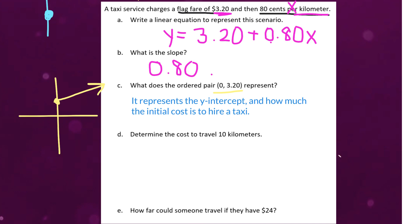So, part D says to determine the cost to travel 10 kilometers. So, here we can use the equation to help us. We know x represents the number of kilometers we're driving. So, in this case, we're being told x is 10. So, we're going to use our equation, y equals 3.20 plus 0.80 times x. But, instead of writing x, I'm actually going to replace it with 10, because we know x equals 10.